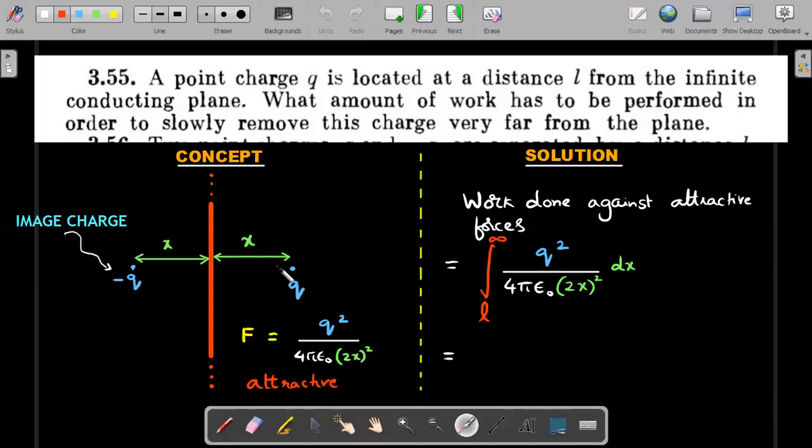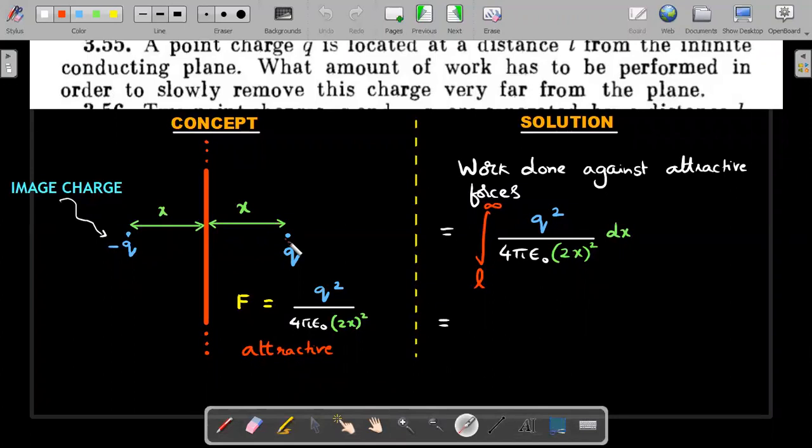We can prove it is equivalent to having a magnitude of minus q. At arbitrary distance x, the force would be equivalent to having a 2x distance negative charge. That would be an attractive force. For an external agent to move this towards right, he needs to apply equal and opposite force.